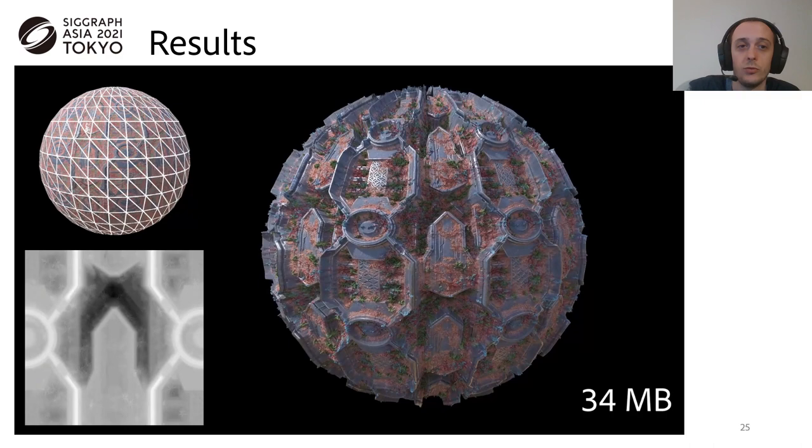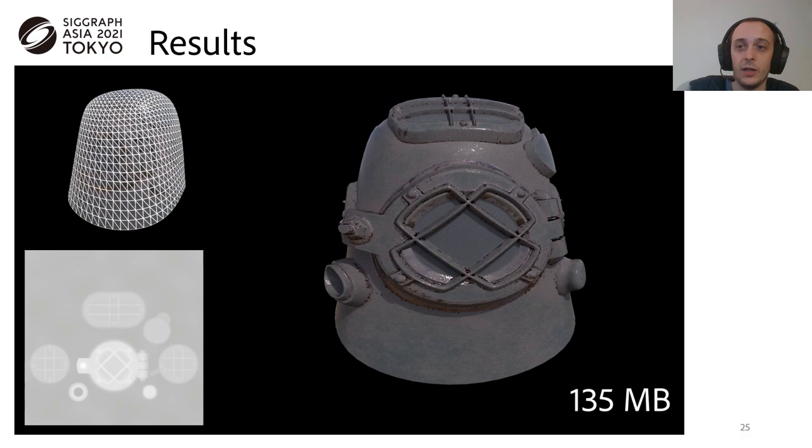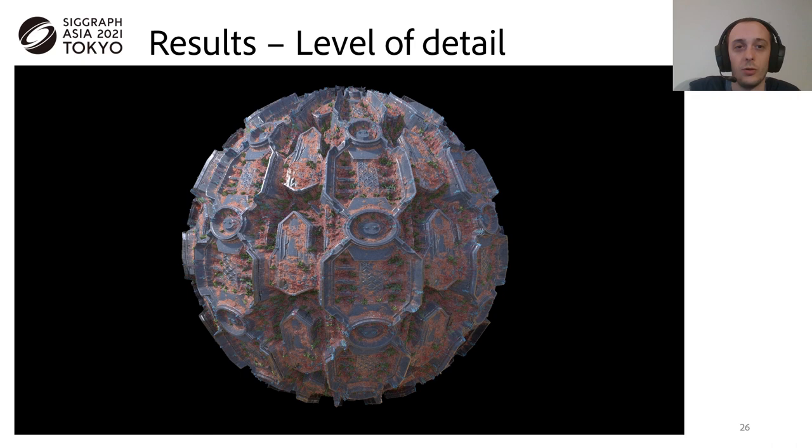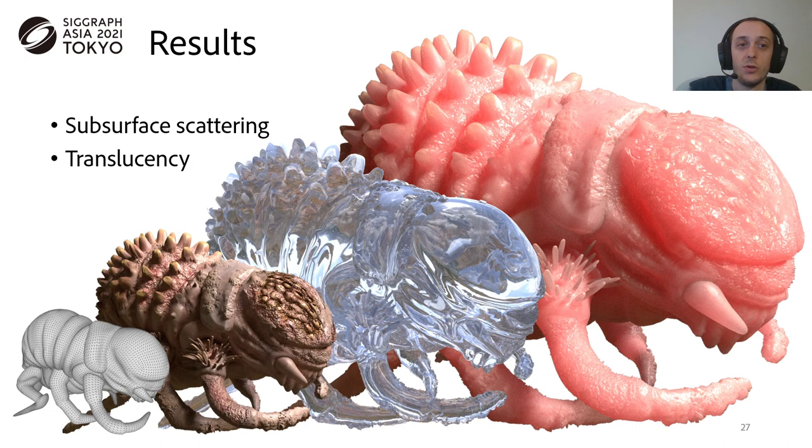Here are some path-traced results, shown on the right, with the amount of memory used to represent the geometry. The base surface is shown at the top left, and the displacement map is shown at the bottom right. And you can see the amount of details produced by the displacement. We show here a geomorph level of detail, which can be used for zoom-out of objects without popping artifacts. Our approach is also robust enough to support advanced raytracing effects such as subsurface scattering or translucency, as shown here with the same DBVH and the same base mesh, but using different materials.